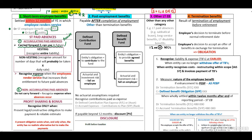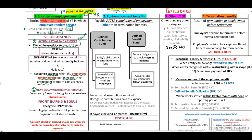We will have to recognize the expense when employees render the service that increases their entitlement to future paid absences. With any accumulating absences, identify from the scenario: first, the number of days to provide for, and second, the rate per day. Then identify the opening balance in days, the number of utilized days, and how many days were accrued for the current year. Utilized days will be deducted, resulting in your closing balance.